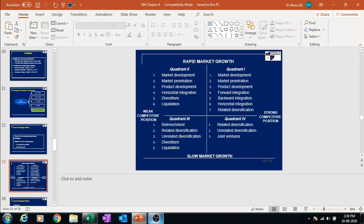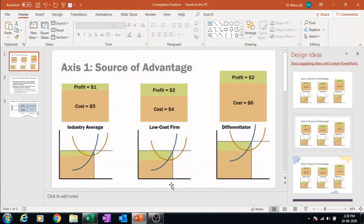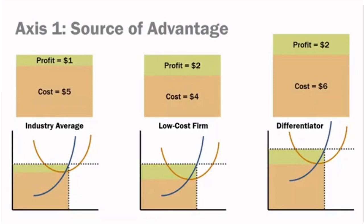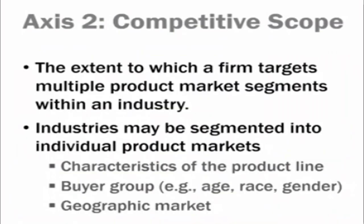To determine competitive position, I have selected a few parameters. One is cost and profit margins. For example, if our cost is four dollars and our competitor's cost is five dollars, and both sell at the same price, we earn a profit of two dollars while the competitor earns only one dollar. That cost advantage reflects a strong competitive position.